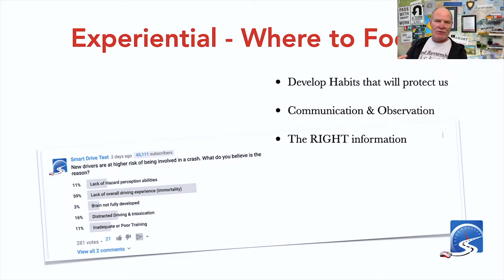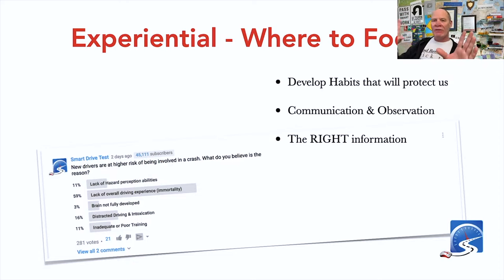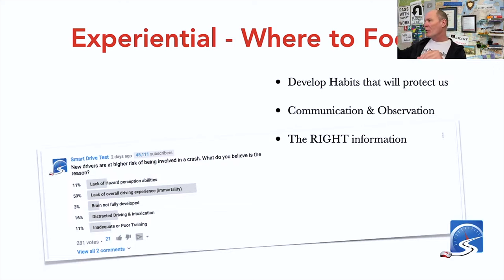Following distance, stopping in traffic one vehicle length back, signaling every time you change direction, and shoulder checking — in my professional opinion, shoulder checking is the first skill that drivers lose after getting a license because they no longer have to do it, so it just disappears.